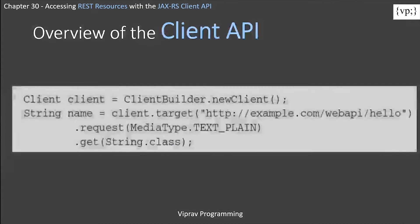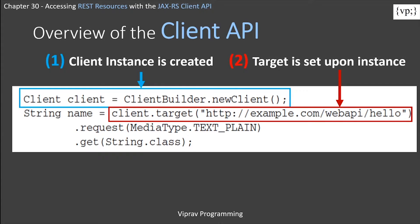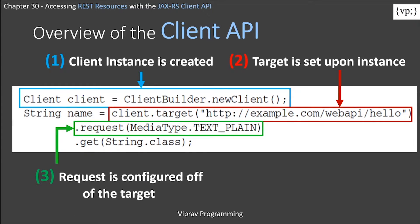In this example over here, you can see that first of all we create a client instance. This new instance defines the needs that a REST client requires to use a RESTful web service. Next, we create a target that is set upon the instance. This target is set using the URI that is set during the runtime. Next, we set a request, which is configured off the target over here, and this sets the media type.